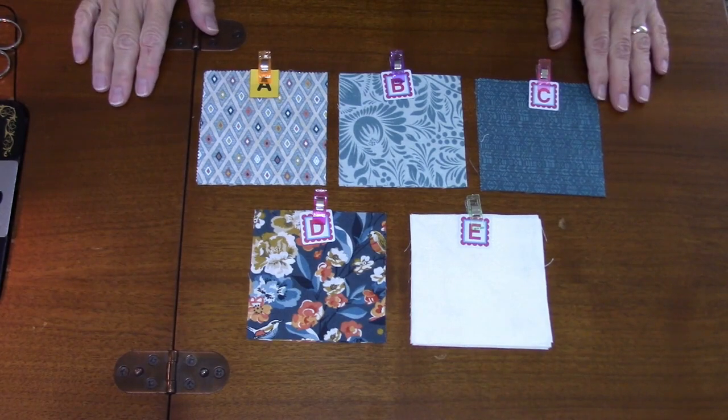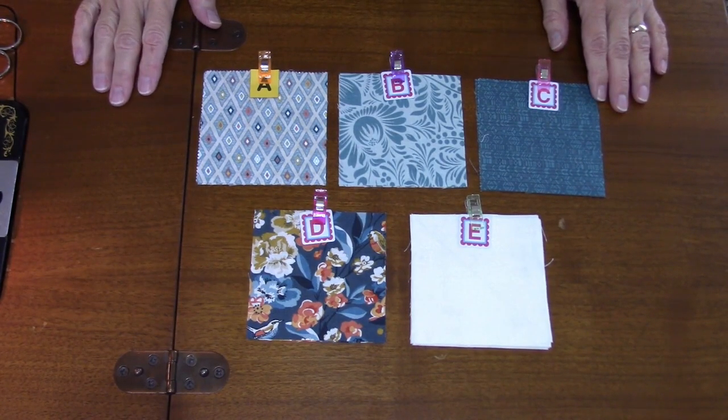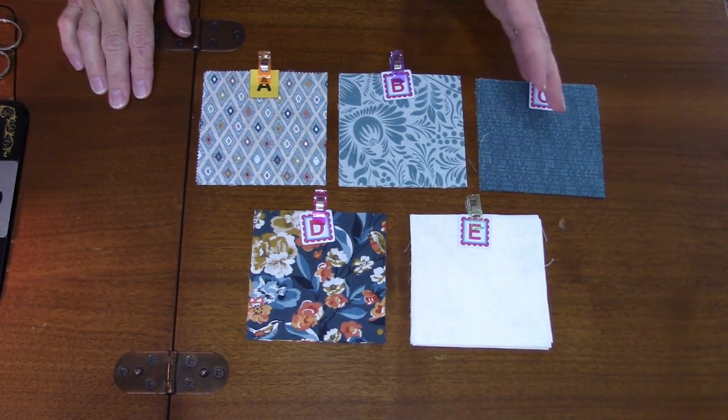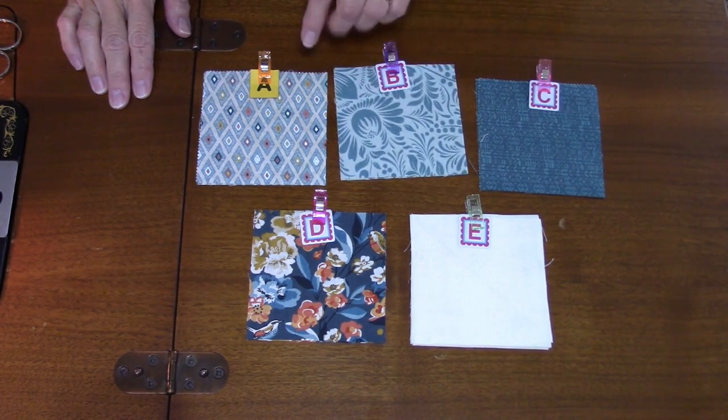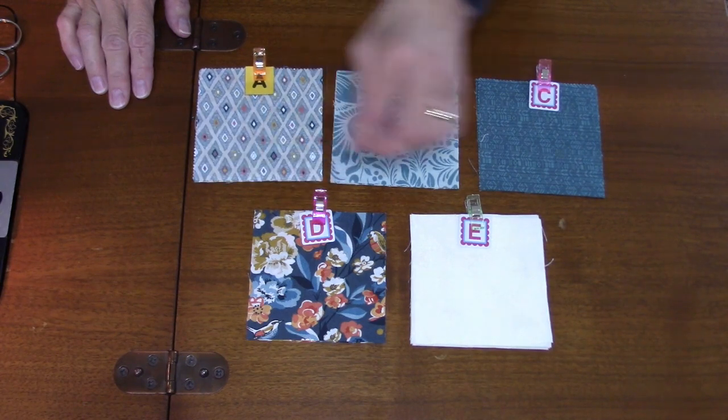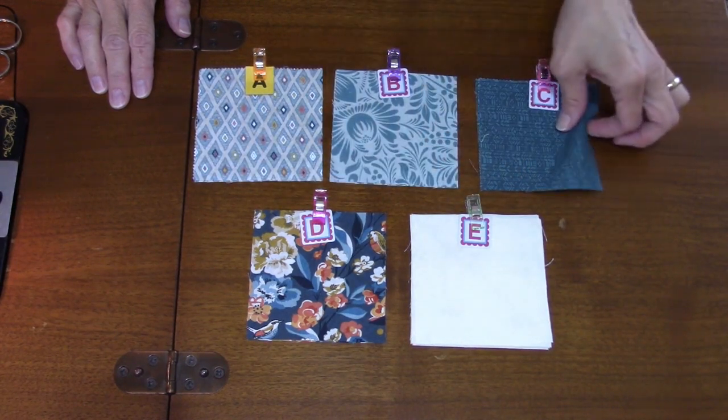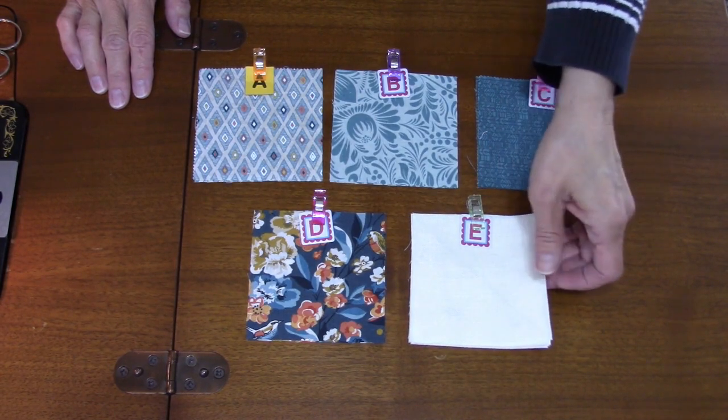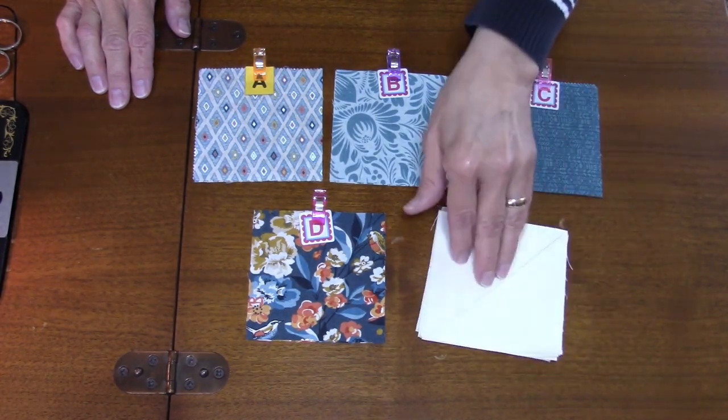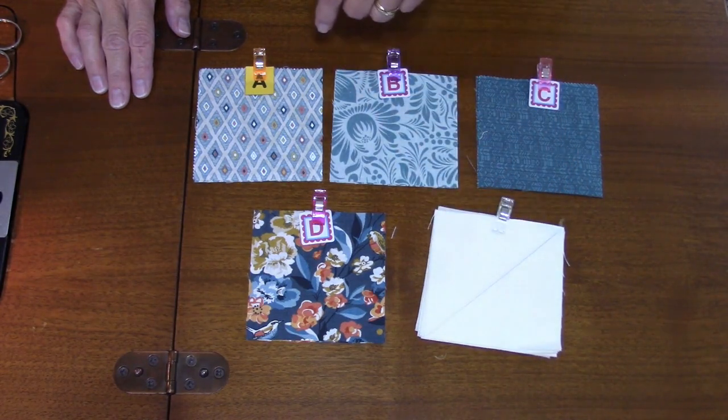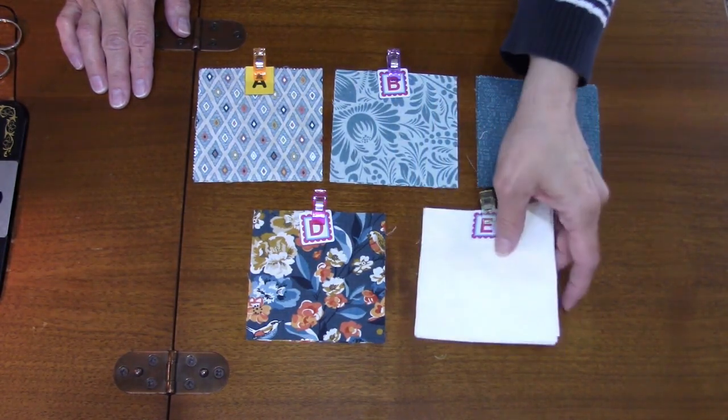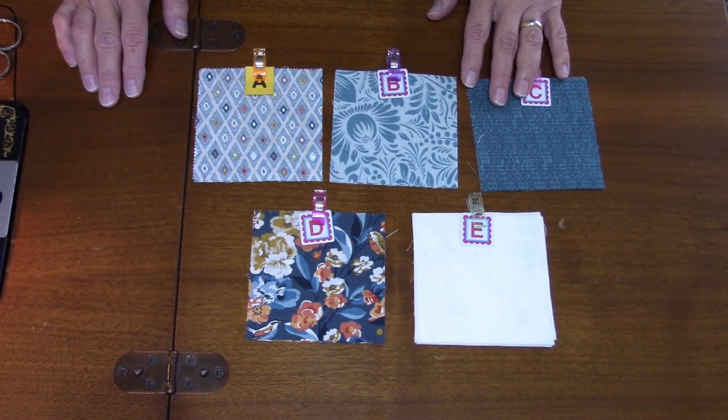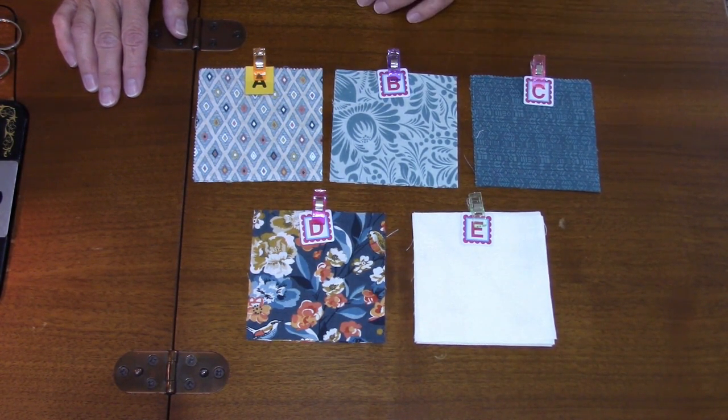Here are the fabrics you need to make the double Z block and they're all the same size, all four inch squares. We need two A's, two B's, two C's, two D's, and then you need eight E squares. On the back of the E squares you'll want to draw a diagonal line on the wrong side. This is made up of all half square triangles, so we're going to go ahead and get started and make a whole bunch of half square triangles.